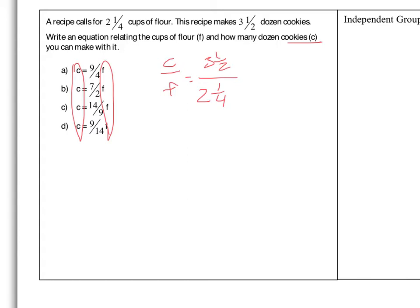I'm going to change those to improper fractions. So this is going to be seven-halves divided by nine-fourths. I'll flip the second and multiply by the reciprocal — times four over nine. I can do some cross-canceling here if I change this to two times two, and that gives me 14 over nine. So my constant of proportionality is 14 over nine.